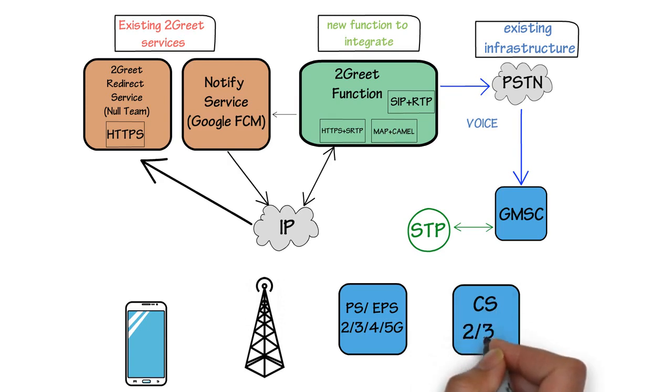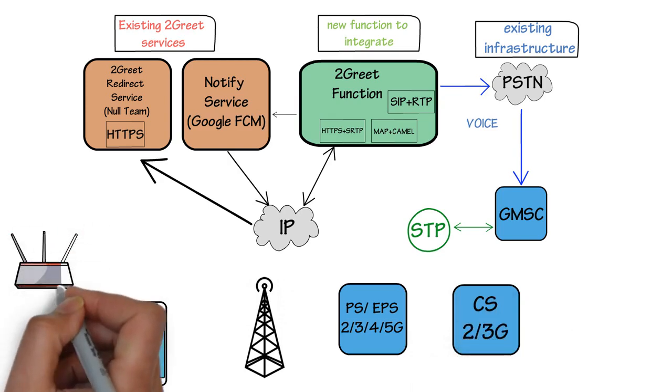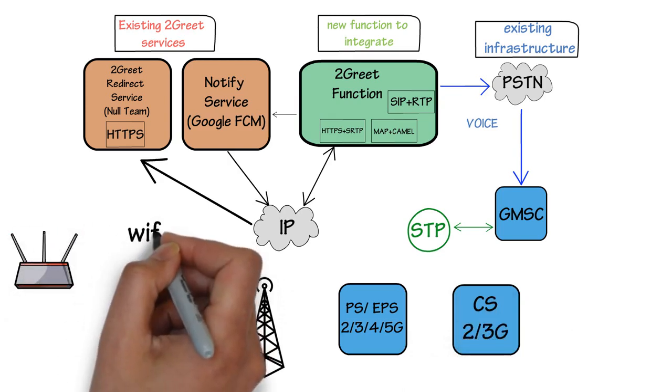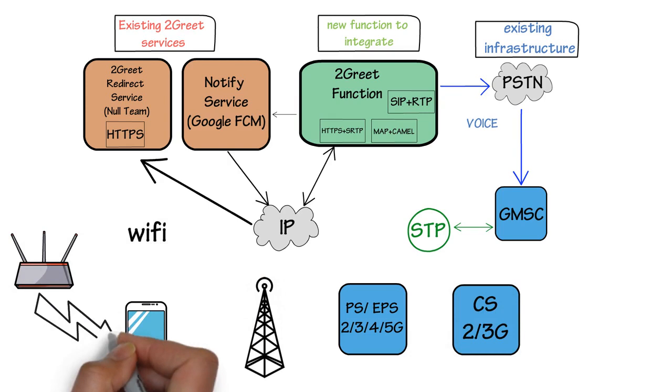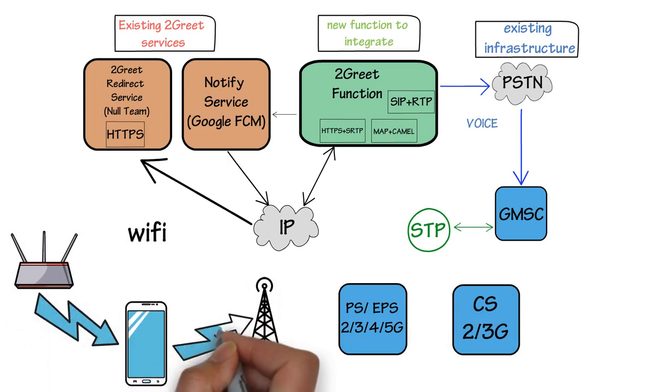For mobile-originated calls and USSD, the 2Greet function generates its own signaling, so existing services are not impacted in any way.